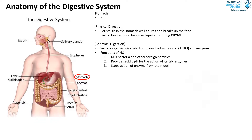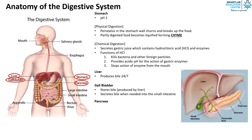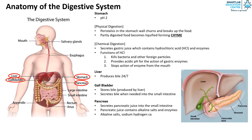The liver produces bile continuously. The gallbladder stores bile produced by the liver and secretes bile when needed into the small intestine. The pancreas secretes pancreatic juice into the small intestine, and this pancreatic juice contains alkaline salts and enzymes. The alkaline salt sodium hydrogen carbonate increases the pH of the acidic chyme to pH 8.